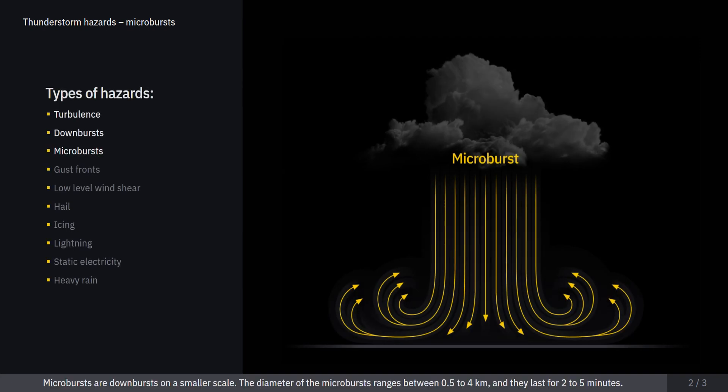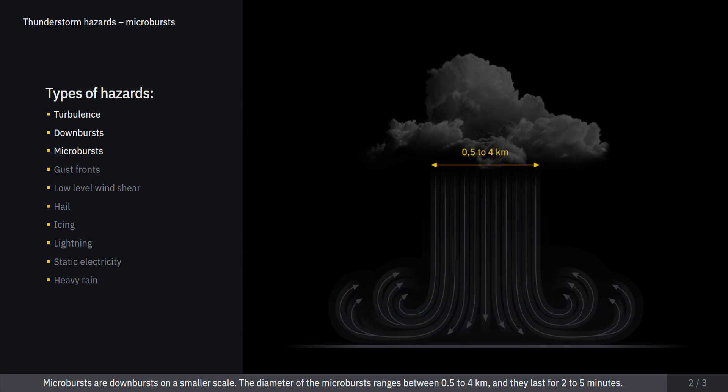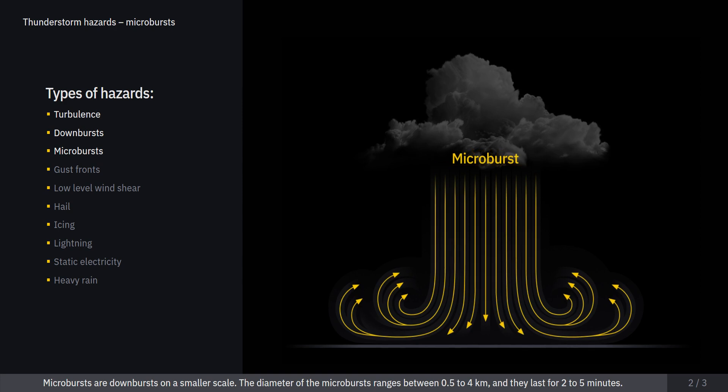Microbursts are downbursts on a smaller scale. The diameter of the microbursts ranges between 0.5 to 4 km, and they last for 2 to 5 minutes. This phenomenon is very dangerous, as it is concentrated over a small area. Microbursts degrade the performance of the aircraft, and may lead to stall.